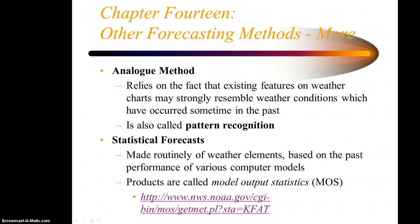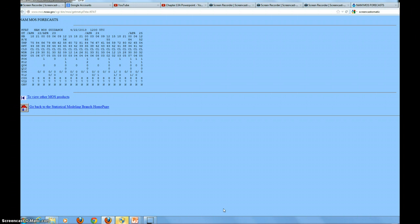Then there are forecasts heavily relied on called statistical forecasts. These are made routinely of the various weather elements like temperature, low and high temperature, dew point, sky condition, precipitation, layers of clouds, based on the past performance of various computer models. The products that come from those computer models are called model output statistics, or MOS. What I'm about to show you is the MOS forecast, actually for a date and time from the 22nd of April to the 25th of April, 2013.